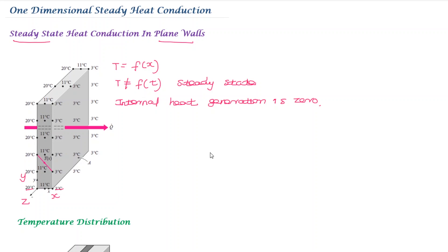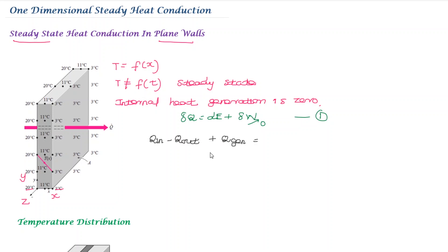If we look at the one-dimensional generalized heat conduction equation, we can derive it. Starting from the first law of thermodynamics: delta Q equals dE plus delta W. The energy balance gives us: Q_in minus Q_out plus Q_generation equals the rate of change of internal energy, which is m·c_p·dT/dt.